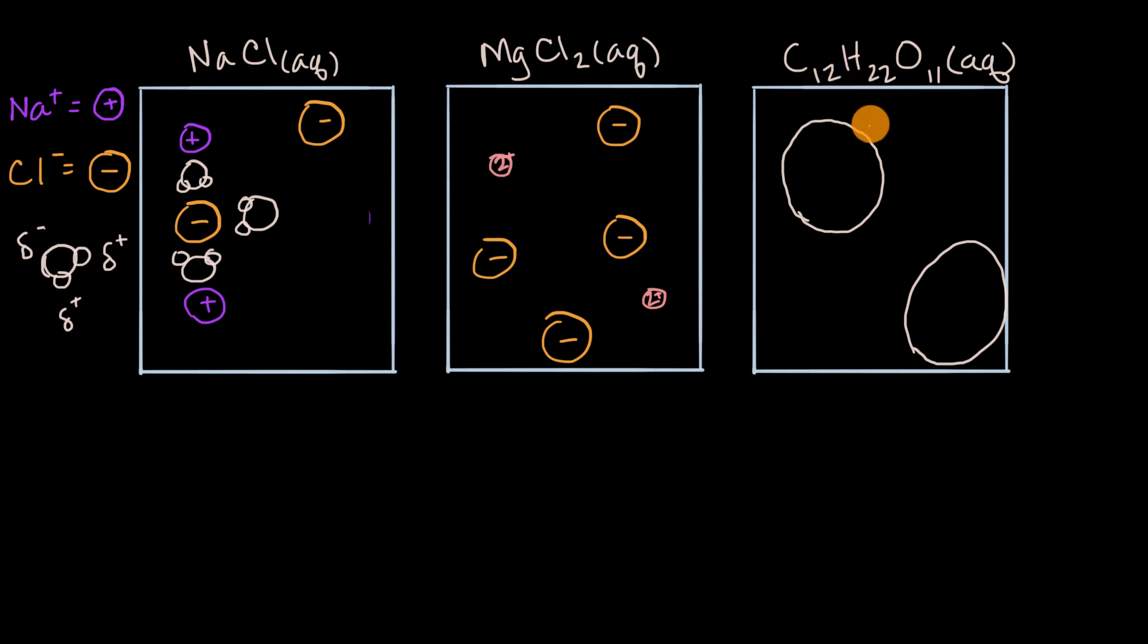So there's parts of the molecule that are partially positive, and other parts of the molecule that are partially negative, other parts that are partially positive. And so that's able to be attracted to the various ends, depending on whether it's partially positive or partially negative, of the water molecule. And so I'll just write it like this: C12H22O11.